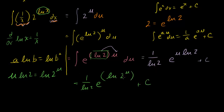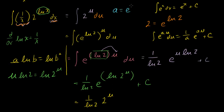What is e raised to the natural log of 2 to the u? The natural log of 2 to the u is the power that you have to raise e to in order to get 2 to the u, by definition. So if we raise e to that power, we're going to get 2 to the u. In general, we can write any number a as e to the natural log of a — that's the exponent you have to raise e to to get a. So e to the natural log of 2 to the u is just 2 to the u, and then I have my plus c.